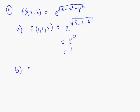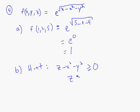Part B, I'll give you a hint on. The hint is we don't allow complex-valued functions. So we need to set, if we're asked to find and sketch the domain, we need to set the radicand in that exponent greater than or equal to 0. And then if you solve it for z, you'd get this. And if it's an equality, it's an elliptic paraboloid, and you're going to have to shade above it. So that's my hint — I'm going to let you finish that one off.